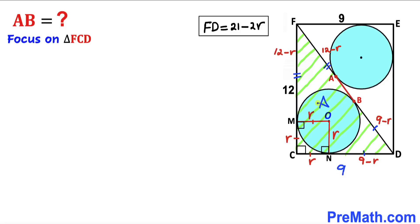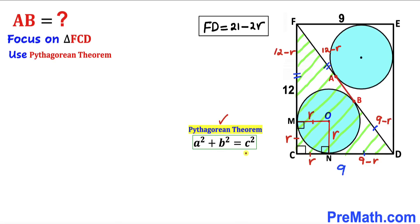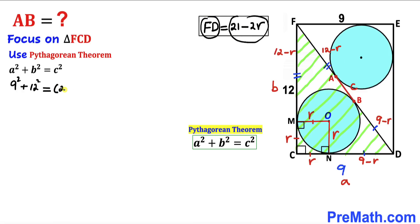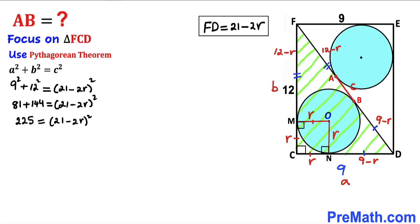Let's focus on the big right triangle FCD and apply the Pythagorean theorem to calculate radius r. Using A² + B² = C²: side A is 9, side B is 12, and the hypotenuse C is the diagonal FD. Substituting: 9² + 12² = (21 minus 2r)², which gives 81 + 144 = (21 minus 2r)². Taking the square root of both sides: